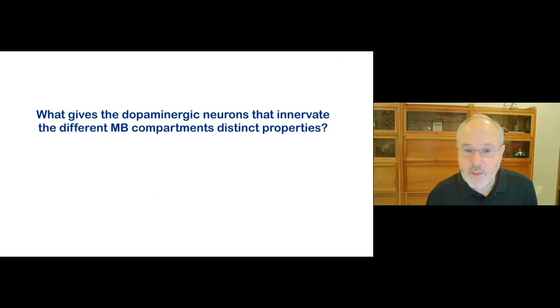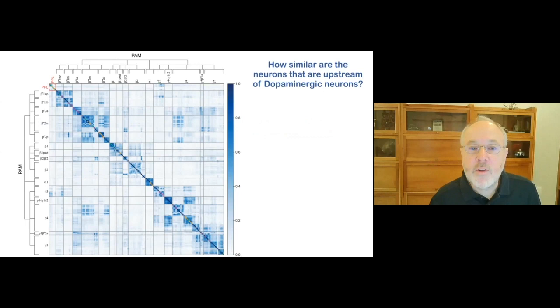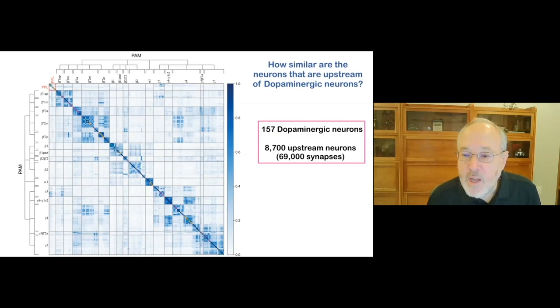And what that allows you to do is form memories of visual information independently of olfactory memories or in combination. I've told you that dopamine neurons provide different types of teaching signals. Dopaminergic neurons learn about the fly's internal state and its external environment from their inputs. So for the first time the connectome allows us to look comprehensively at the neurons that provide input to each of the 157 dopaminergic neurons that innervate the mushroom body.